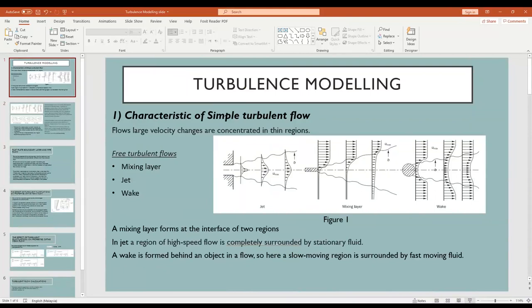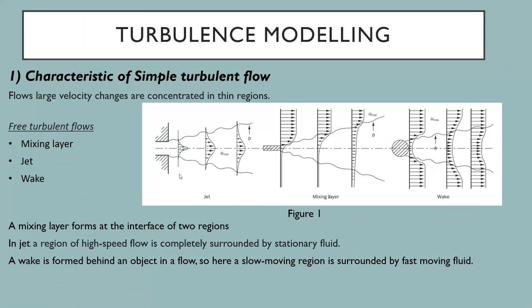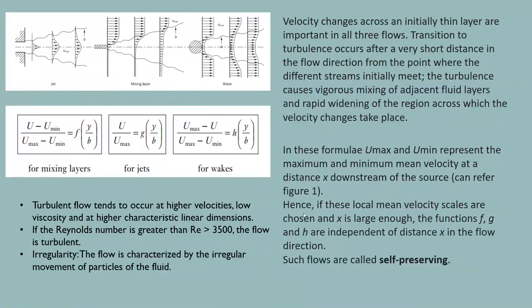Velocity changes across a shear layer are important in all three flows: jet, mixing layer, and wake. Turbulence occurs after a short distance in the flow direction from the point where the different streams initially meet. The turbulence causes vigorous mixing of adjacent fluid layers.